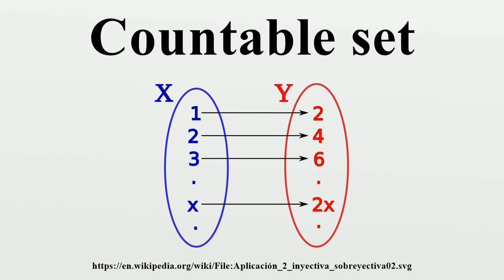Regarding total orders: countable sets can be totally ordered in various ways, e.g., well orders such as the usual order of natural numbers or the integers in a specific order, and non-well orders such as the usual order of integers or the usual order of rational numbers. Note that in both examples of well orders, any subset has a least element, while in both examples of non-well orders, some subsets do not have a least element. This is the key definition that determines whether a total order is also a well order.